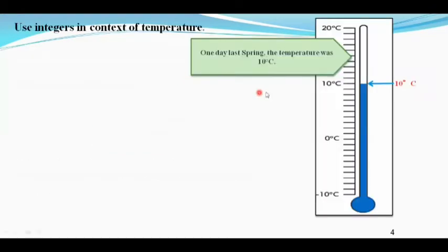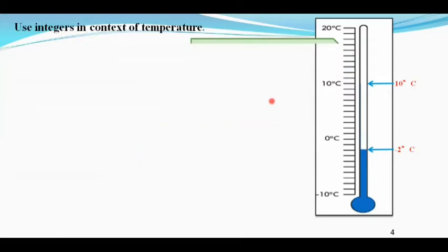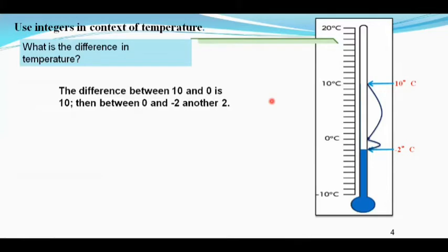Let us solve one more question. One day last spring the temperature was 10 degrees Celsius. Overnight it fell to minus two degrees Celsius. What is the difference in temperature? From 10 to 0 it is 10, and from 0 to minus 2 it is 2.